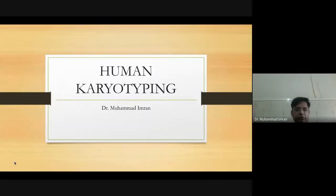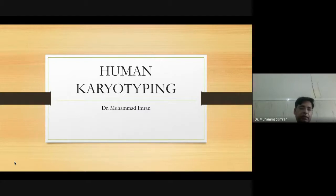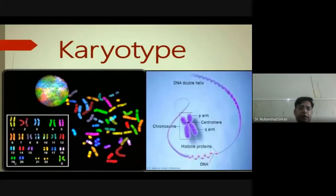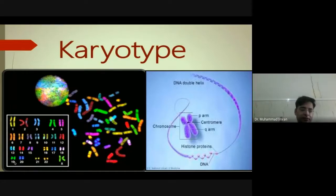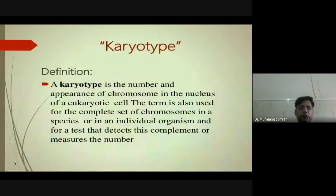Hello everyone, today we will study about human karyotyping. This is a very important lecture in genetics. Karyotyping is a study to learn about disorders and genetic diseases like Turner syndrome, Klinefelter syndrome, Down syndrome, and many other syndromes. A karyotype is the number and appearance of chromosomes in the nucleus of a eukaryotic cell.